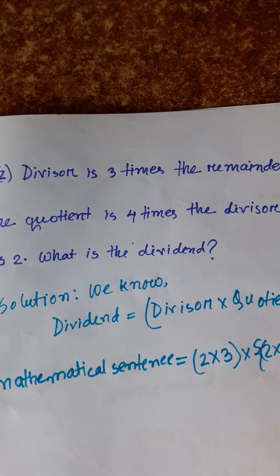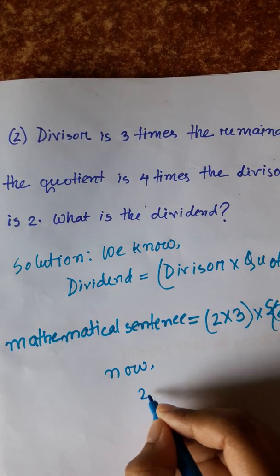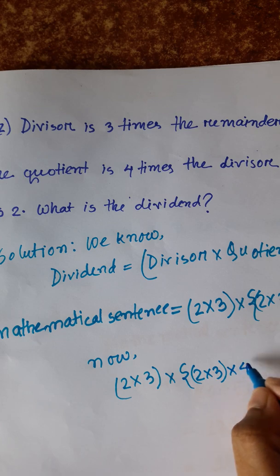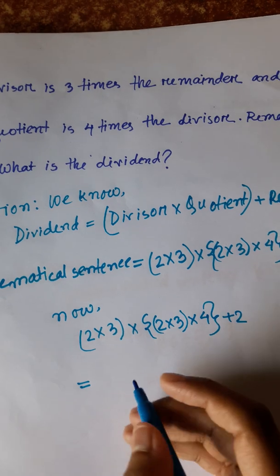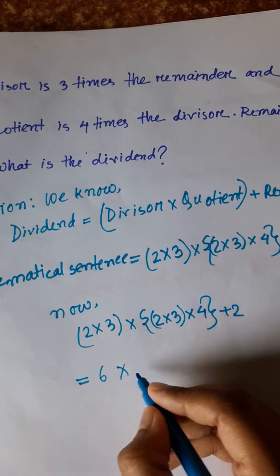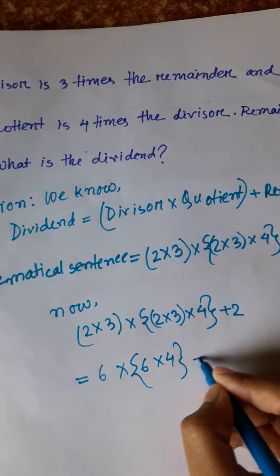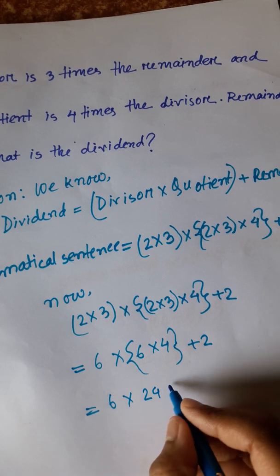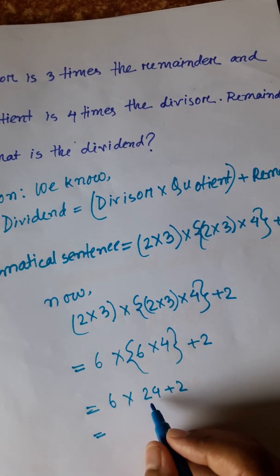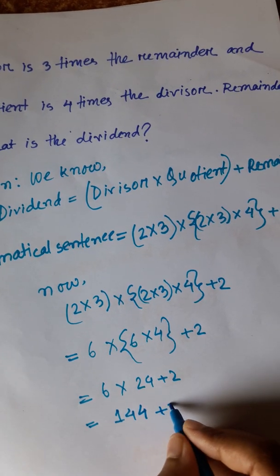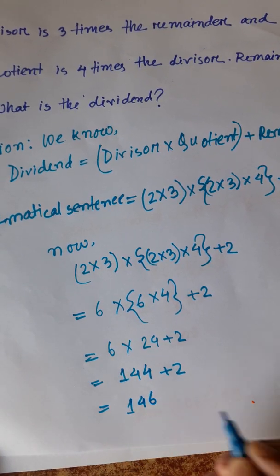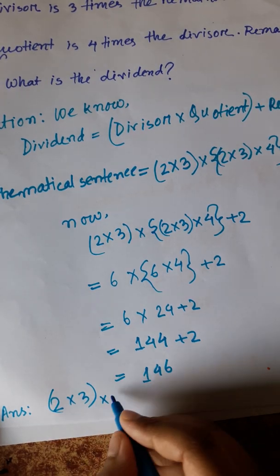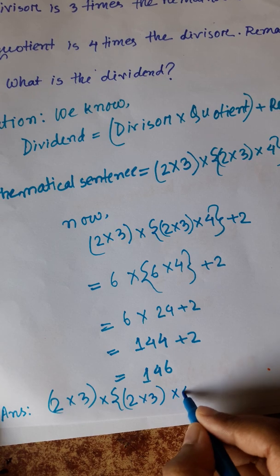So: 2 into 3 into (2 into 3 into 4) plus 2. That gives: 2 into 3 is 6, and 2 into 3 into 4 is 24. Then 6 into 24 is 144, plus 2 equals 146.